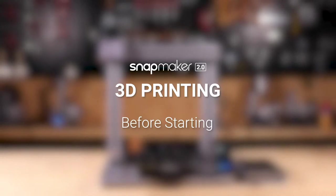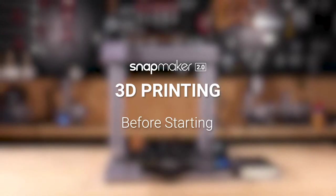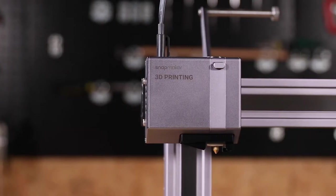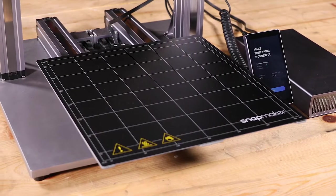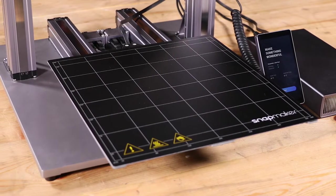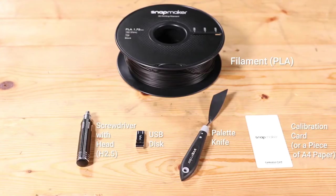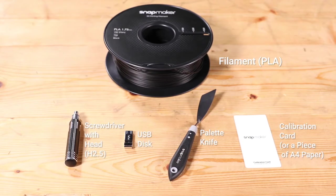Before starting, you need to make some preparations. First, make sure that the 3D printing module, print platform and print sheet are properly attached to your machine. Fetch the accessories and tools as illustrated.